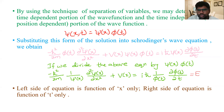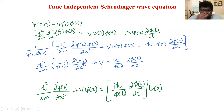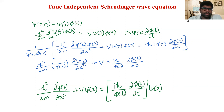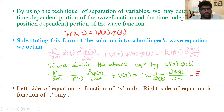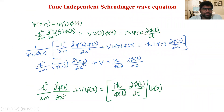For a time-independent system, the particle behavior does not change with respect to time — it is position-dependent only. As derived, we can split ψ(x,t) into ψ(x)·φ(t), where one function depends on x and the other on t. The general Schrödinger equation is the starting point, and we modify it based on conditions.